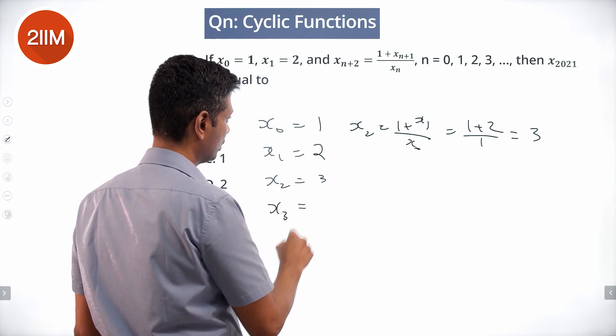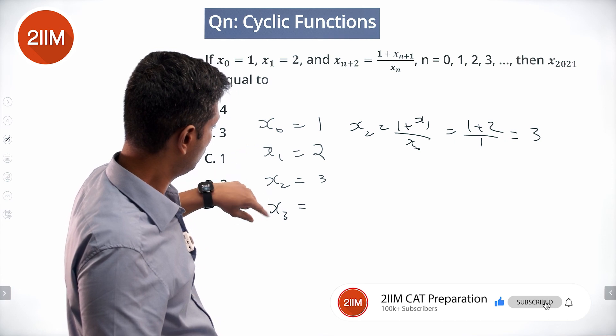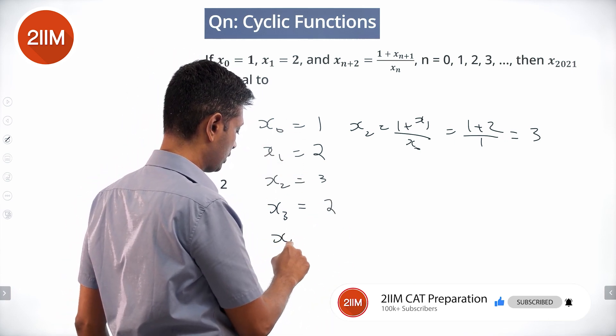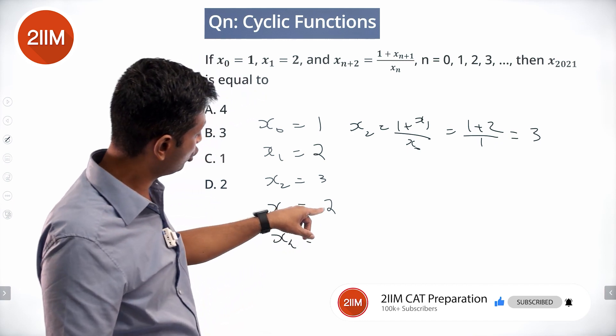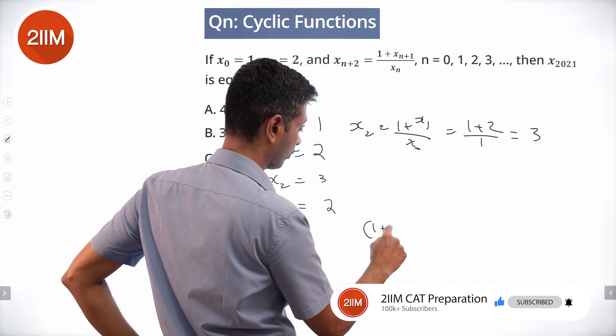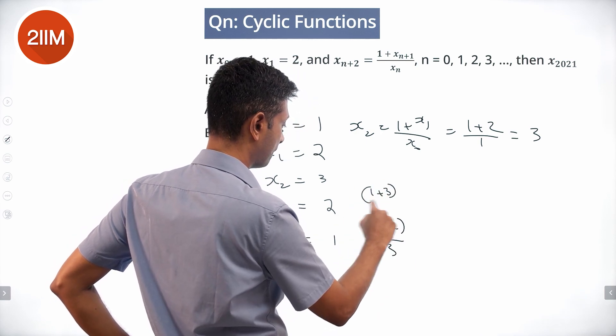x₃: 1 plus the previous term divided by this, (1 + 3)/2 equals 2. x₄: (1 + 2) divided by this, (1 + 2)/3, this is 1 plus 3/2.